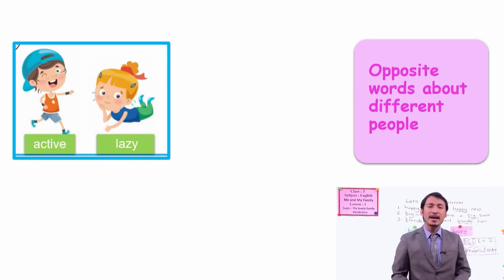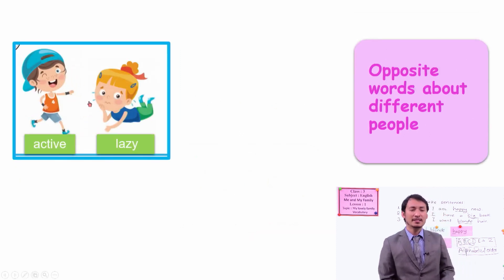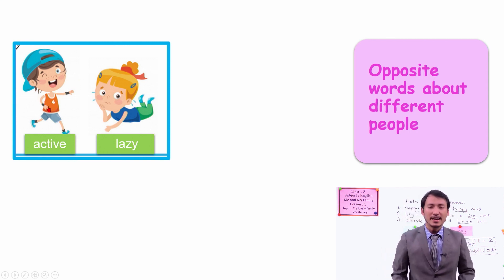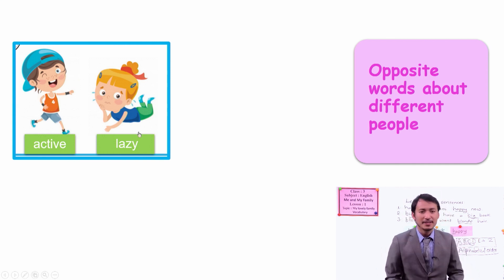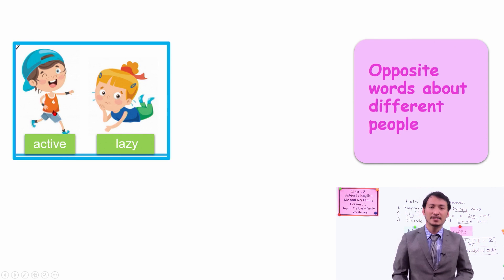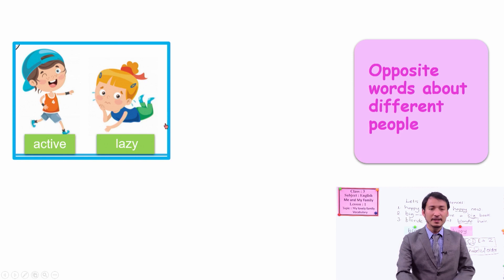Another one is active and lazy. Which one are you? Are you active or are you lazy? An active person is laughing, jumping, doing things regularly. And a lazy person is just lying and not doing things, sleeping a lot.